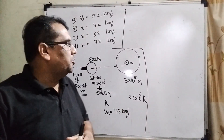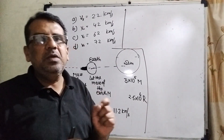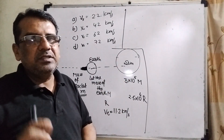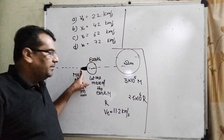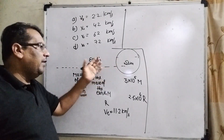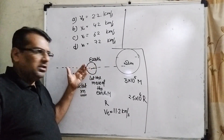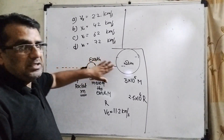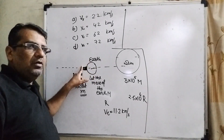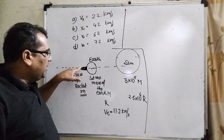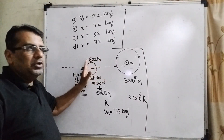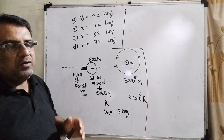Dear students, before solving the question, you should find out the key points and the data given, and understand how you can correlate them — that is the basic concept for solving this question. Here the rocket is launched from the Earth in the Sun-Earth system. Generally we use potential energy for the rocket, but since both the Sun and Earth are present, both their potential energies act on the rocket. So the sum of potential energies must equal the kinetic energy, using conservation of energy.